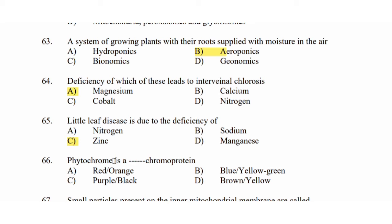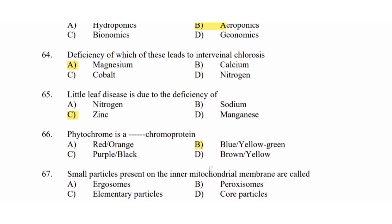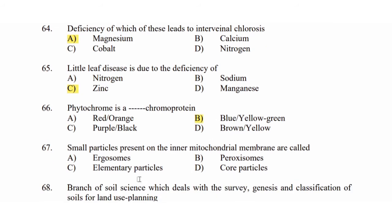Next question: Option A: phytochrome. Option B: chromoprotein. The pigment colors — Option A: red or orange. Option B: blue. Yellow, green. Option C: purple or black. Option D: brown or yellow. The answer is Option B: chromoprotein.